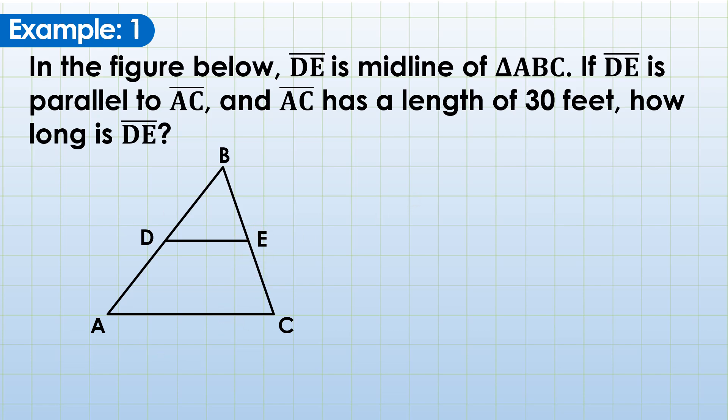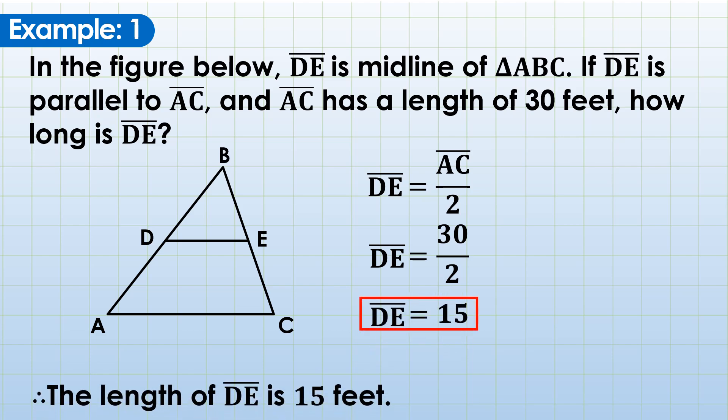But how does it go when you write it with complete solution? First, you have to construct an equation. Your equation here, according to the midline theorem, is DE is one-half of AC, or simply DE equals AC over 2. Next is substitution. Since DE is what we are looking for, we're just going to copy it. AC here becomes 30, as is stated in the problem. And then simplify the right side of our equation, that is 15. That's the final answer. That's how we use the midline theorem.